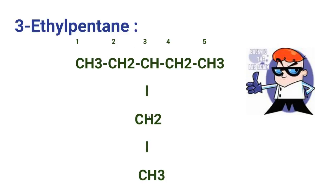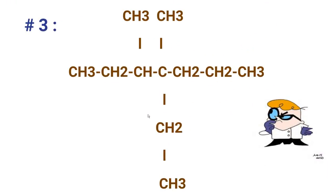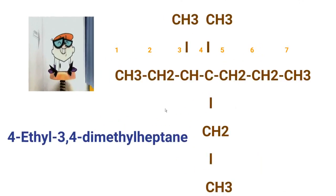Here is the next compound. It seems a bit difficult but it's really not. Just look at the longest chain and see how many substituents are present. Write down the name and see the answer. The name is 4-ethyl-3,4-dimethylheptane.